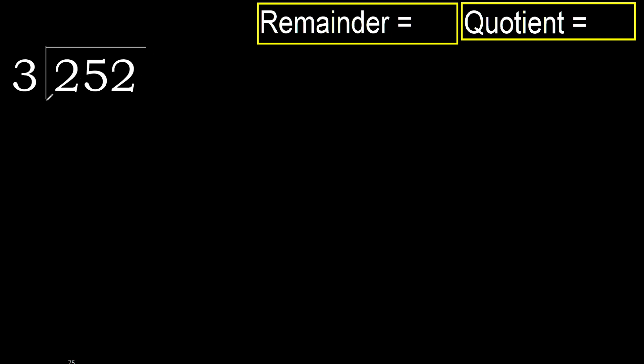252 divided by 3. 2 is less, therefore next. 25 is not less, therefore we work with 25.